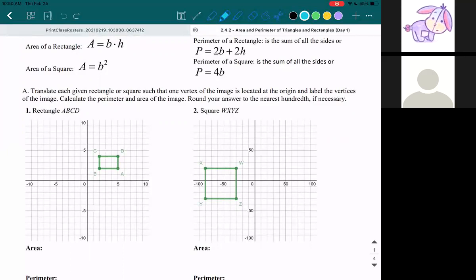So for rectangle ABCD, which is over here, we're going to move one vertex to the origin. So I'm just going to move everything down that way. So we're moving it down two and two left, so I'm going to move every single point two down and two left.